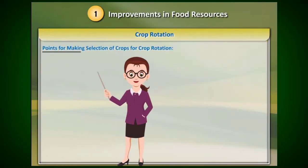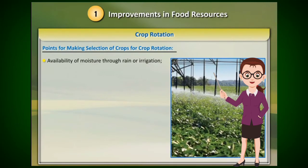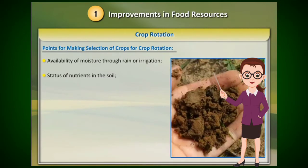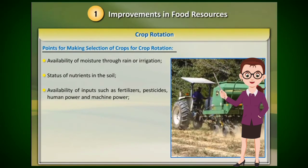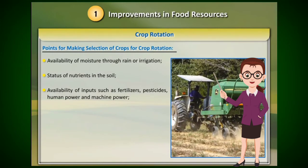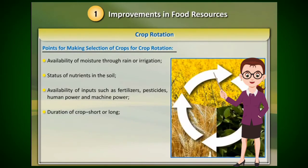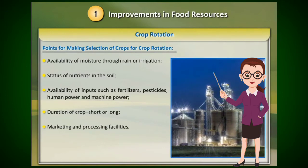This practice will promote build-up of diseases and insect pests and decrease similar nutrients from the soil. Thus, while making selection of crops for crop rotation, the following points should be considered: availability of moisture through rain or irrigation, status of nutrients in the soil, availability of inputs such as fertilizers, pesticides, human power and machine power, duration of crop (short or long), and marketing and processing facilities.